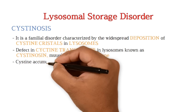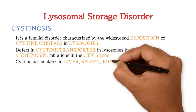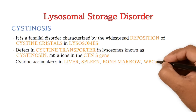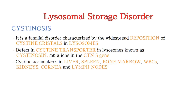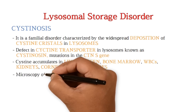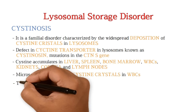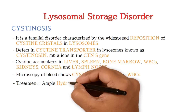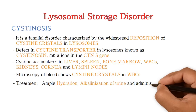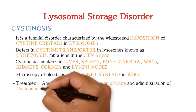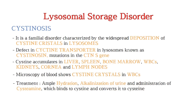The affected organs are liver, spleen, bone marrow, WBCs, kidneys, cornea, and lymph nodes. Microscopy of blood shows cystine crystals in WBCs. Treatment includes ample hydration, urine alkalinization, and administration of cysteamine, which binds to cystine and converts it to cysteine.